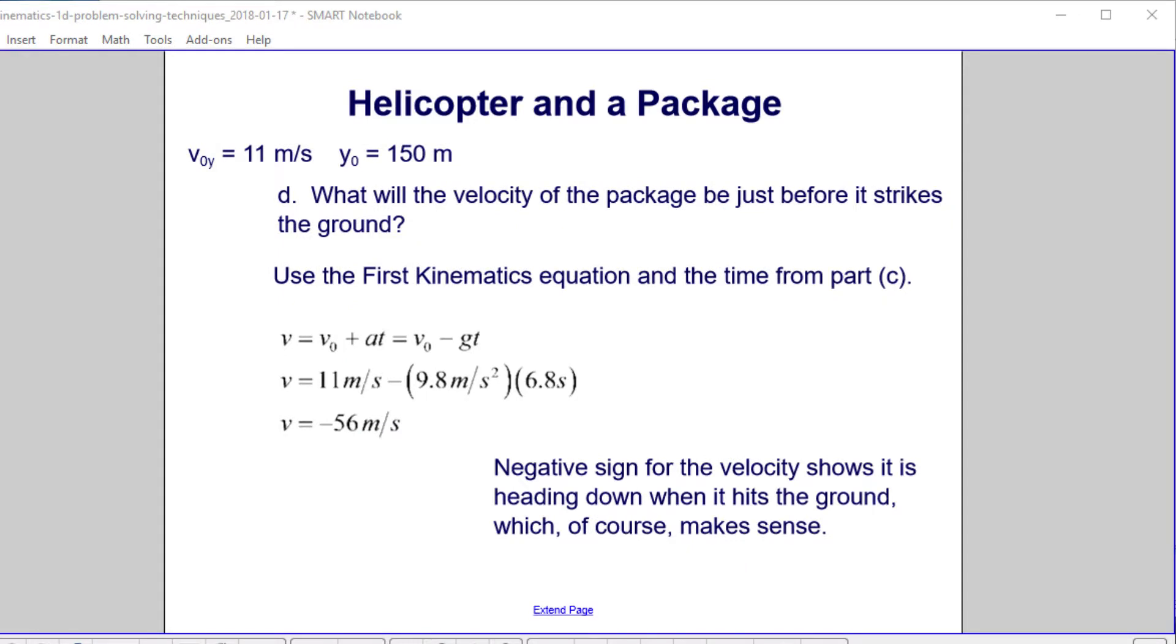What will the velocity of the package be just before it strikes the ground? We'll go back to the first kinematics equation, and we'll take the time that it's in the air that we found from part C. So it's v0 minus gt. Here's our initial velocity, here's our acceleration minus 9.8, and here's how long the package is in the air from part C. And we find that the package has a velocity of negative 56 meters per second, which shows that it's heading down when it hits the ground, which of course makes sense and also rhymes a little bit.